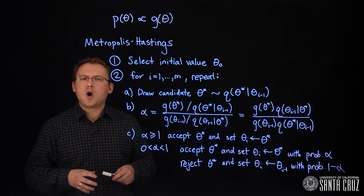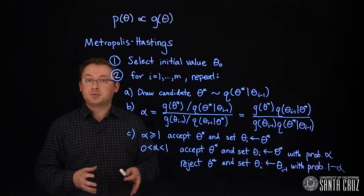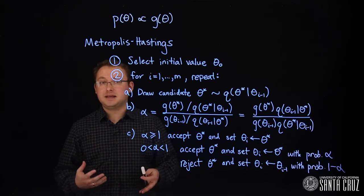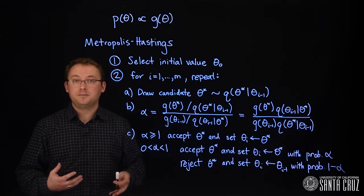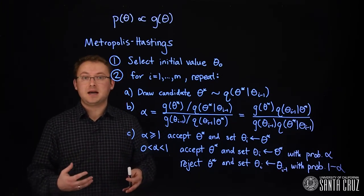If the random walk is taking too large of steps, many of its proposals will have low probability and the acceptance rate will be low. That will cause us to waste many of the draws.